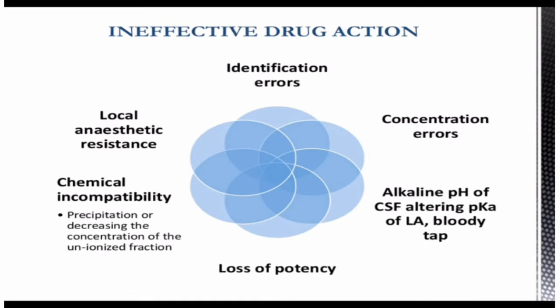There may also be something wrong with the drug itself, such as identification errors — for instance, giving tranexamic acid instead of bupivacaine. There may be concentration errors, such as giving 0.75% or 0.25% instead of 0.5%. The alkaline pH of the CSF can alter the pKa of the local anesthetic, especially in a bloody tap. There may also be loss of drug potency, chemical incompatibility causing precipitation or decreasing the concentration of the unionized fraction, and the possibility of local anesthetic resistance.